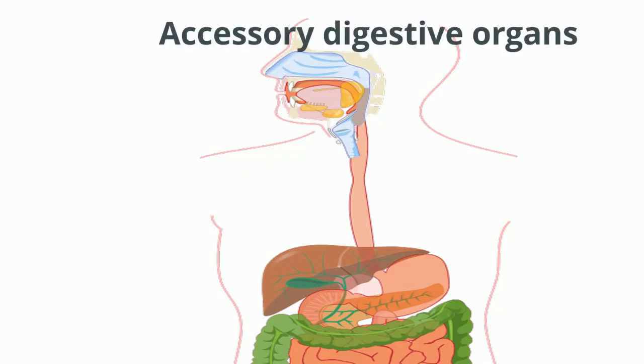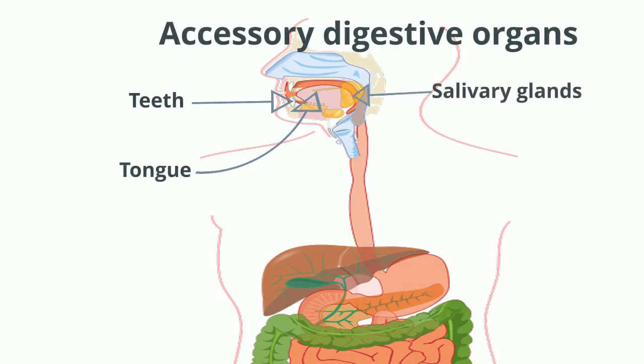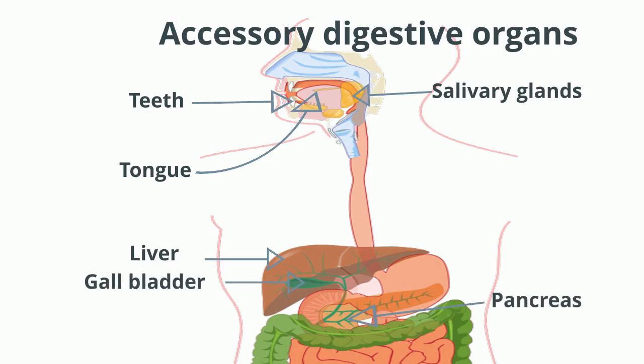Accessory digestive organs include teeth, tongue, salivary glands, liver, gallbladder, and pancreas. The teeth aid in the physical breakdown of food while the tongue assists in chewing and swallowing. However, other accessory organs never come in direct contact with food, but they produce or store secretions that flow into the gastrointestinal tract through ducts, which helps in the chemical breakdown of food.